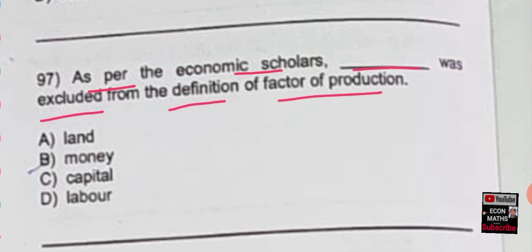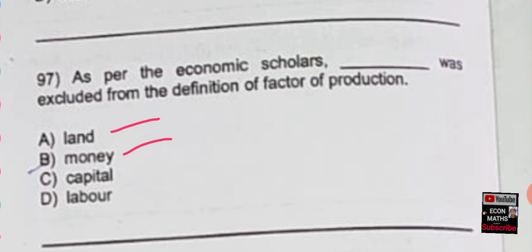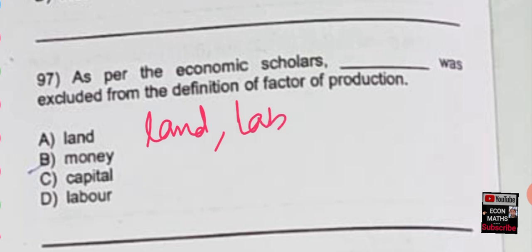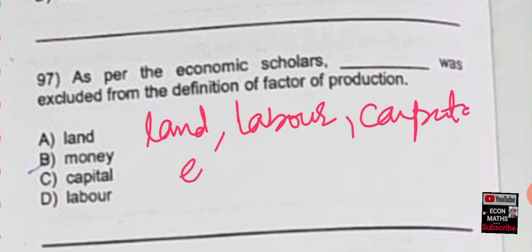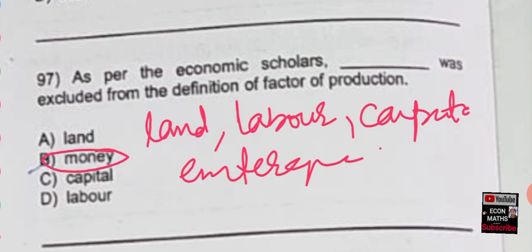The next question: as per economic scholars, which was excluded from the definition of factors of production? The options are land, money, capital, or labor. The correct option is money — option B. The factors of production are land, labor, capital, and entrepreneurship. Money is not included.